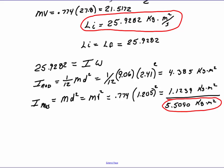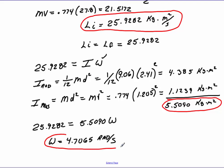We're just about done with this first part. Now to calculate what this value is going to be, we take 25.9282 equal to the moment of inertia of 5.5090 times our angular velocity. And our angular velocity comes to 4.7065 radians per second. So that wasn't too bad. Now, let's see what else we can find out.